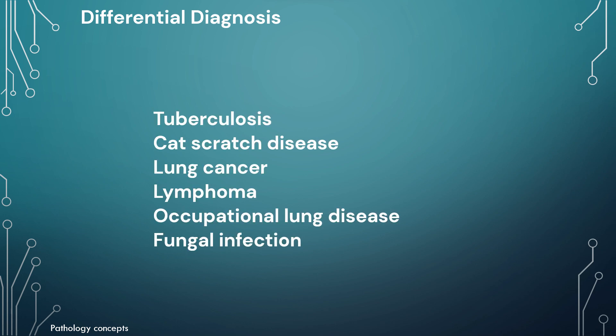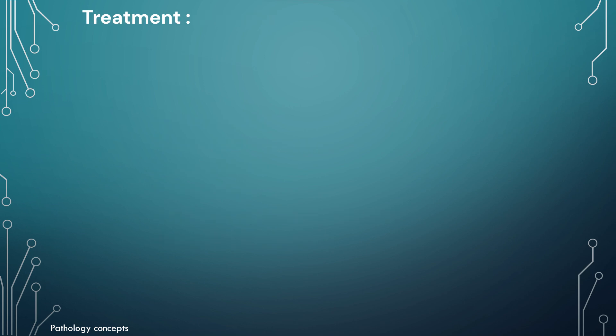The differential diagnosis of sarcoidosis includes tuberculosis, cat scratch disease, lung cancer, lymphoma, occupational lung disease, and fungal infection.